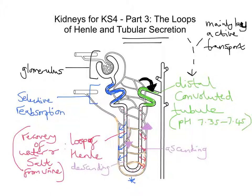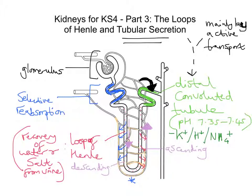The substances secreted into the tubular fluid for removal from the body include potassium ions (K+), hydrogen ions (H+), ammonium ions (NH4+), creatinine, urea, some hormones, and even some drugs like penicillin. As mentioned, we're getting rid of poisons or toxins, and drugs in high concentrations could have that effect — so this is the kidney's opportunity to dispose of them.